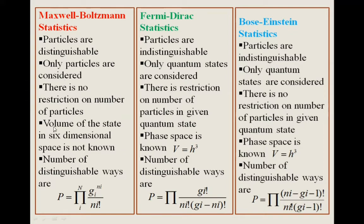In MB statistics, the volume of the state in six-dimensional phase space is not known. In Fermi-Dirac statistics, the phase space is known and V is equal to h³, where h is Planck's constant. In Bose-Einstein statistics, the phase space is also known and V is equal to h³.